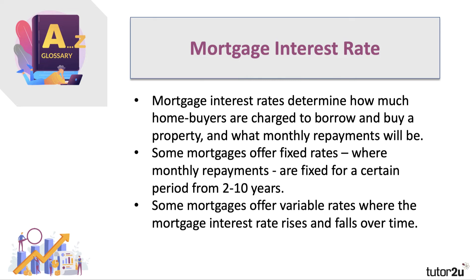Some mortgages offer fixed rates where the monthly repayment is fixed for a period of years — nearly always two, three, or four years, but sometimes as long as 10 or even 15 years. Other mortgages offer variable rates of interest where the interest rate rises and falls over time, often following changes in the base rate of interest.